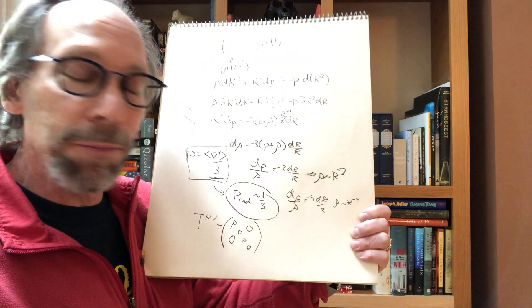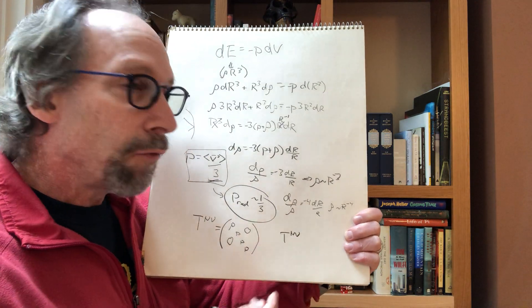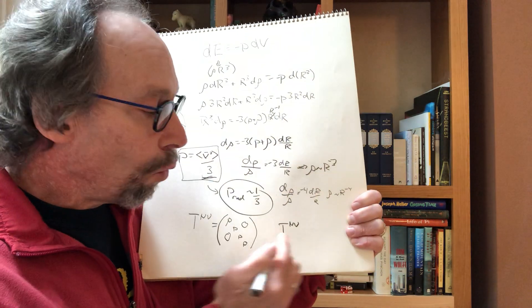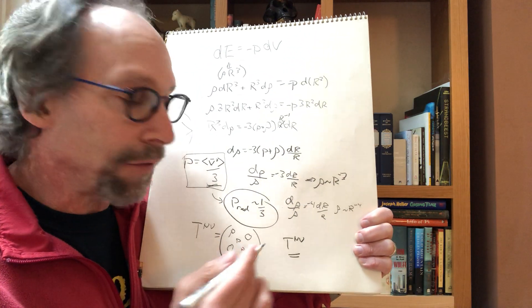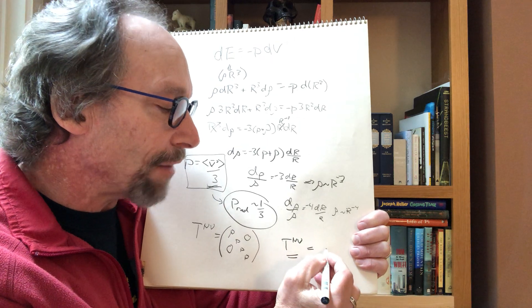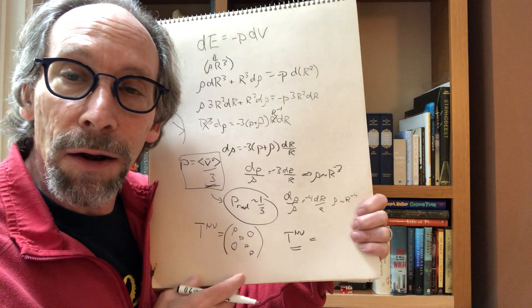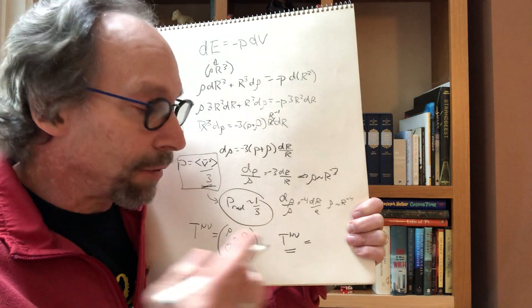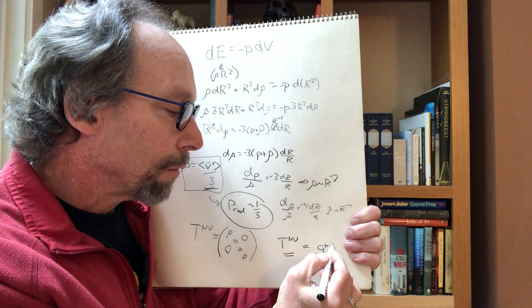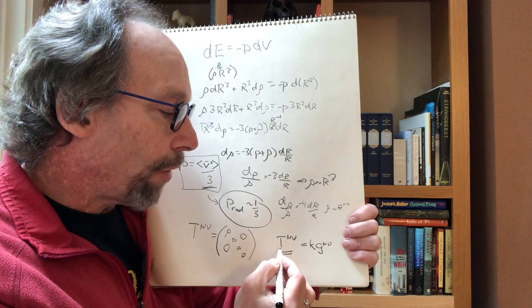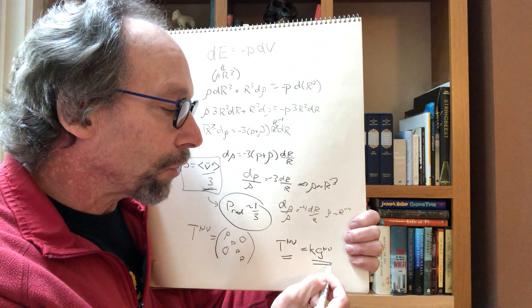That's the form of the energy-momentum tensor for a general fluid. Now, what about when you put energy in empty space? Well, what's the energy-momentum tensor for energy in empty space? Well, this is a tensor. And Lorentz invariance tells us that if they're going to relate this to anything, it has to be proportional to another tensor. Now, if there's nothing there, there's only one tensor in general relativity, and that's the metric.